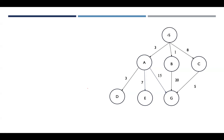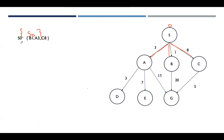Let us solve an example. Here S is the initial start node, so the cost associated with it is zero — written as S0. We place it in the node list. Expanding S0, the adjacent nodes are A, B, and C. Their costs are: B with cost 1, A with cost 3, and C with cost 8.